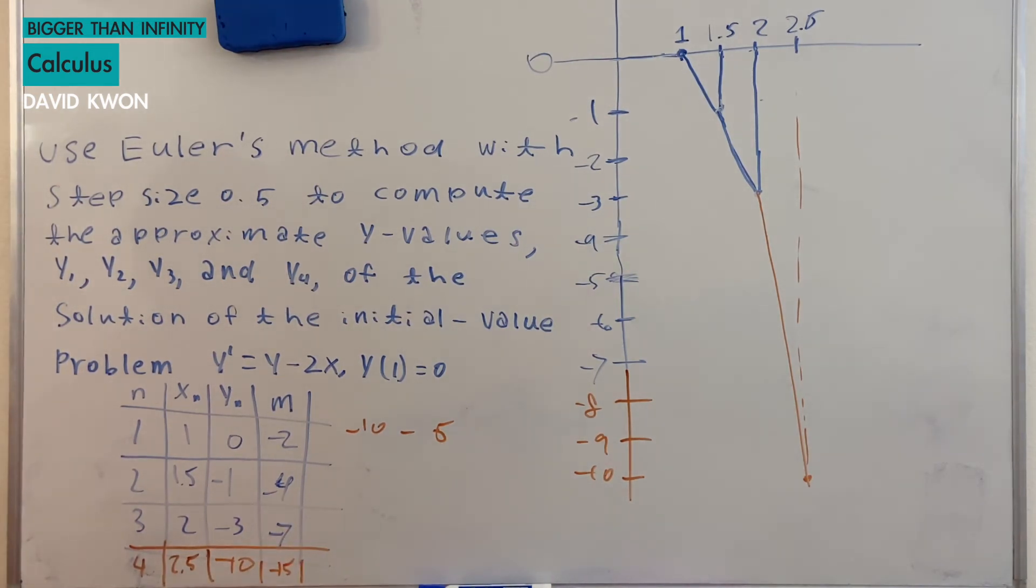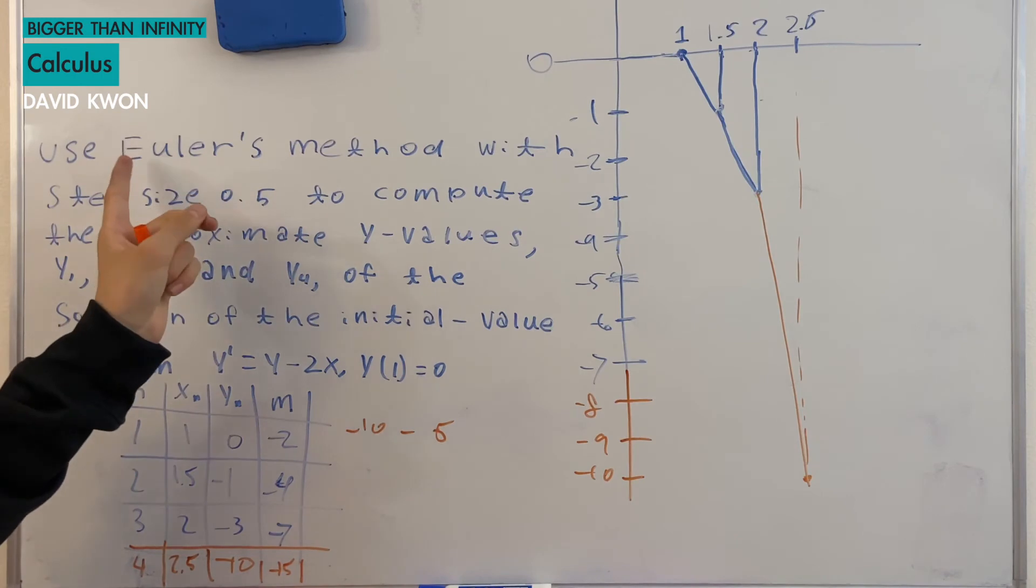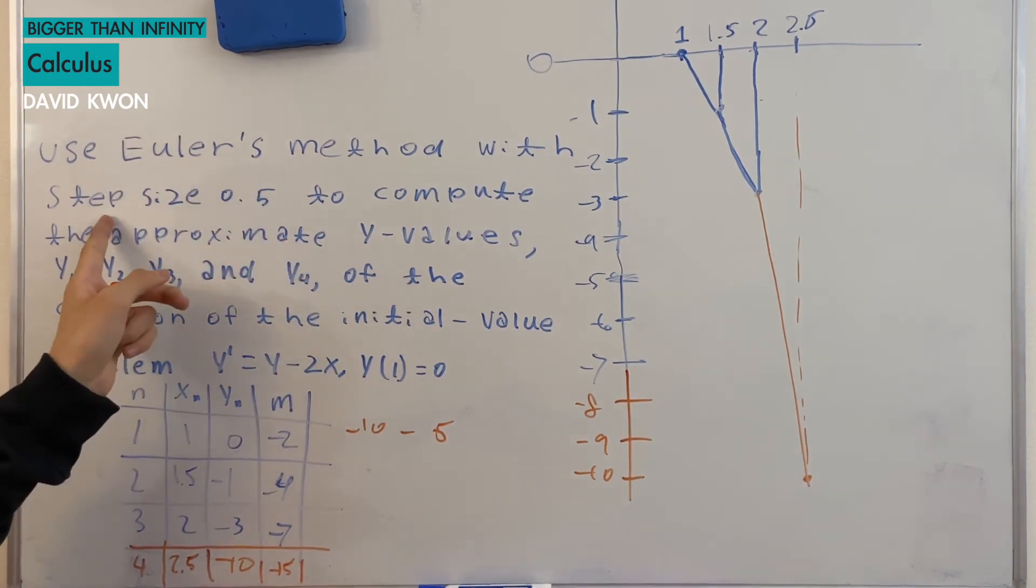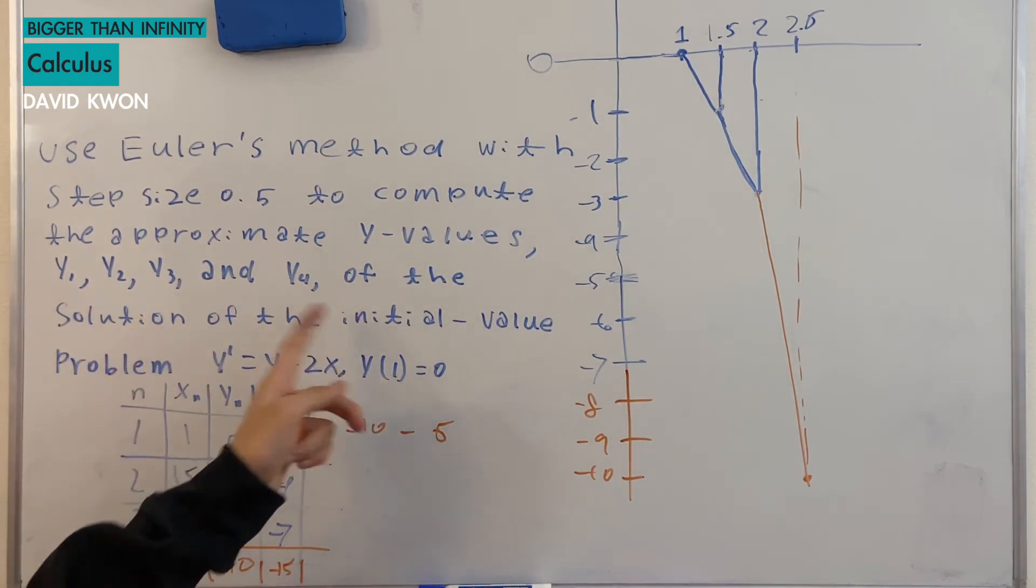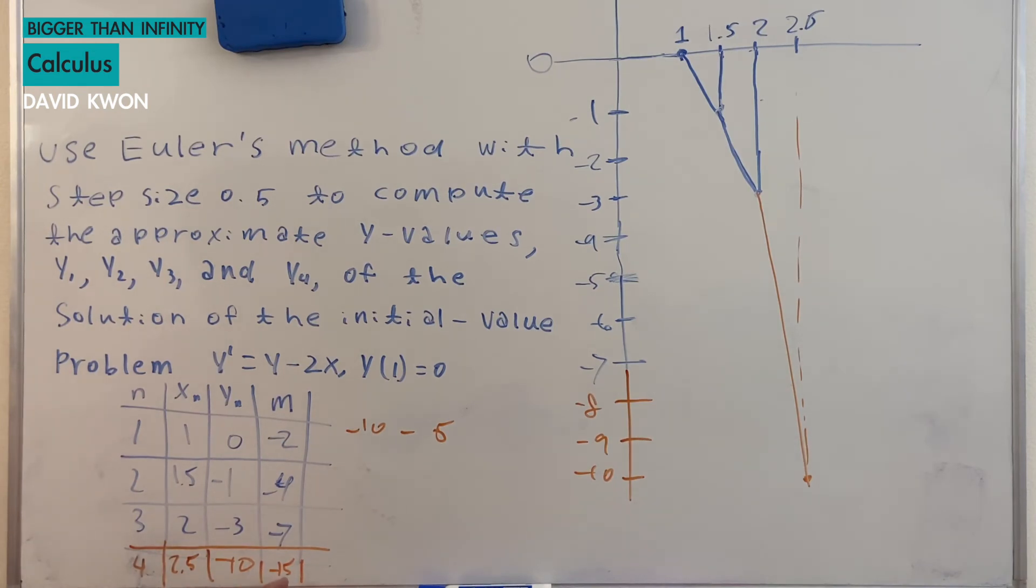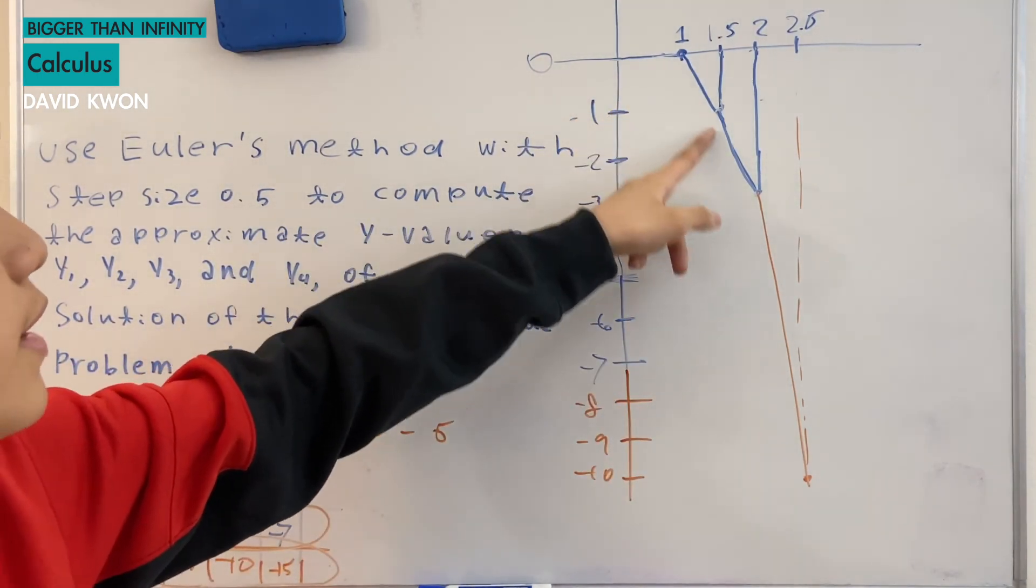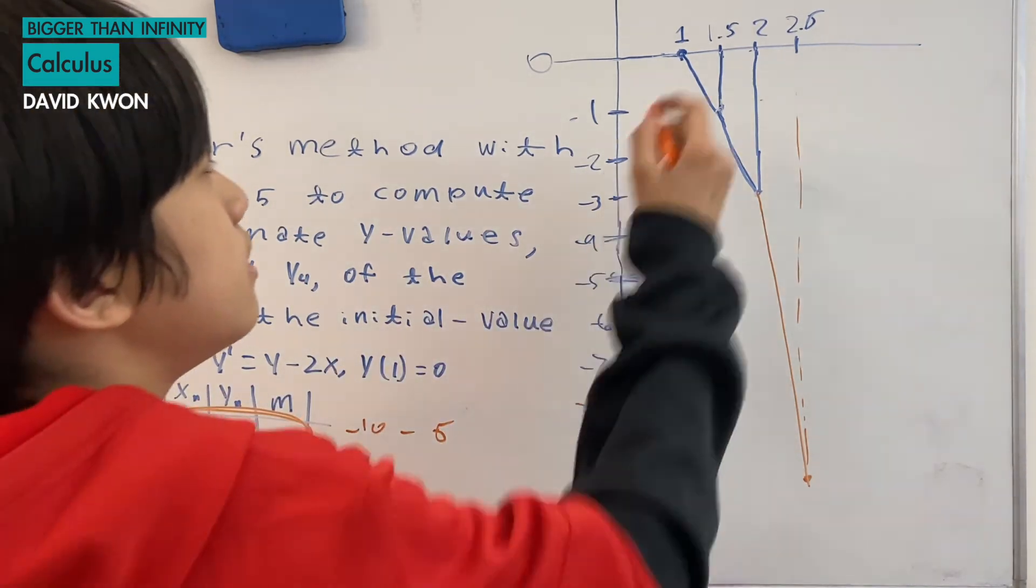And what did it ask in the first? Okay it says use Euler's method with step size of 0.5 to compute the approximate y values of this. So we get the slope is negative 11.5. And if you guys have not noticed, y1 is this column or section. Let's just call this column okay. This column is y1. And this column is y2. And this column is y3. And this column is y4. And it will look like this. Step size of 0.5, 0.5, 0.5, 0.5. So we went one, two, three times.